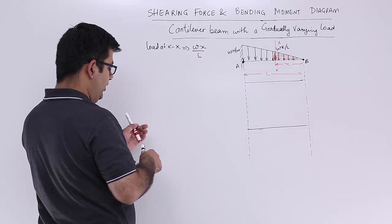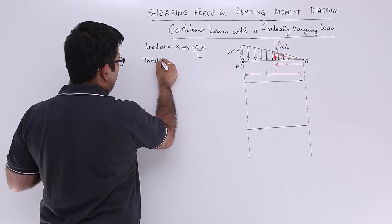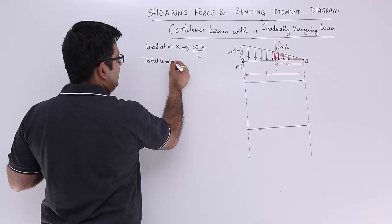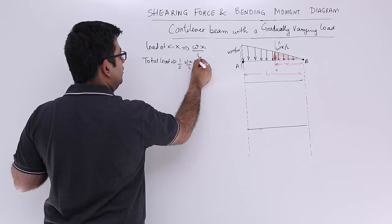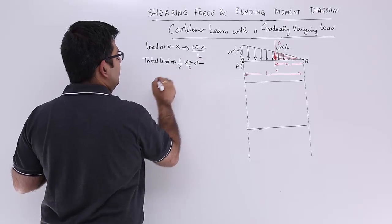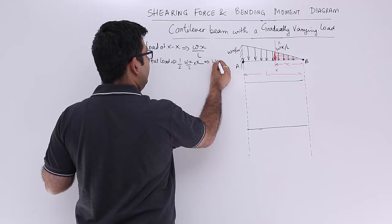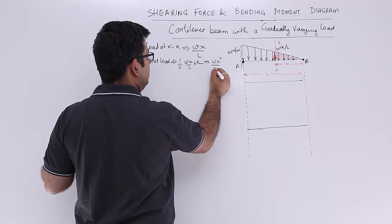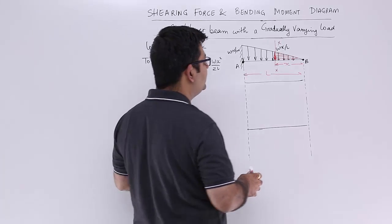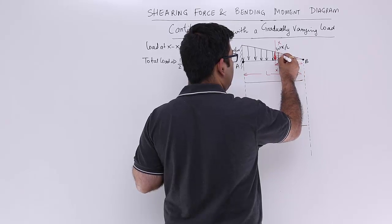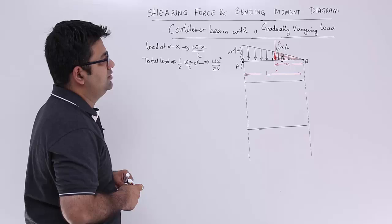So that would be total load. This is equal to half into base into height, that is X. So this would be WX square by 2L, that is the total load and this acts somewhere over here.